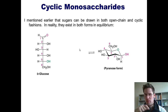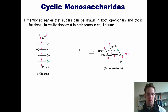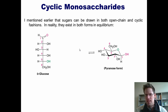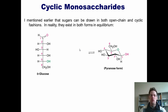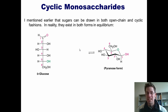Welcome to lecture number three. We're going to wrap up the rest of chapter 22 today. Sugars can be drawn in both their open chain and cyclic forms. In reality, they exist in both forms in equilibrium.